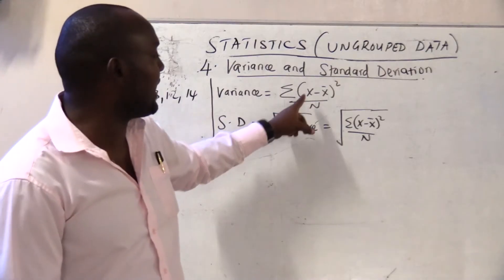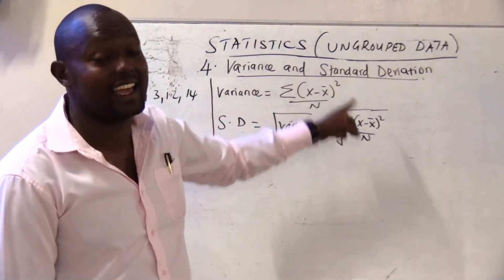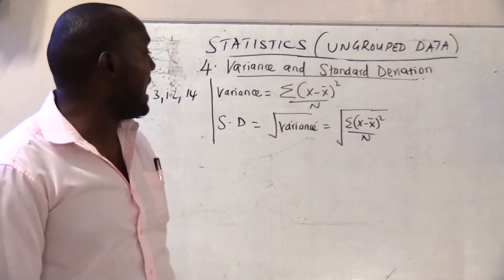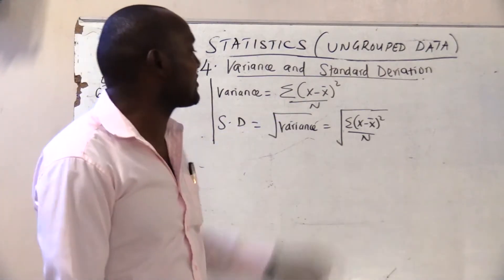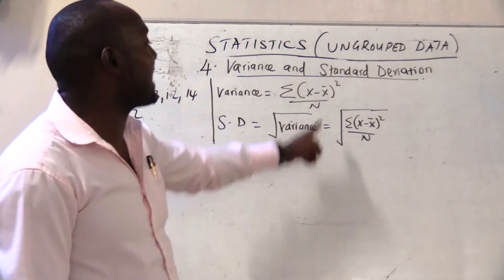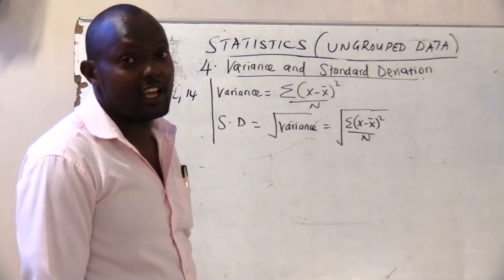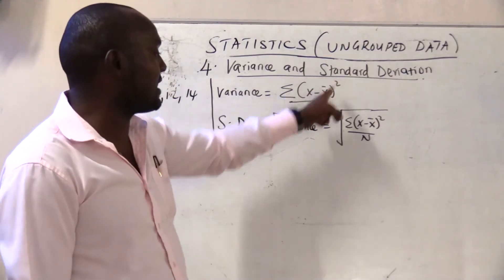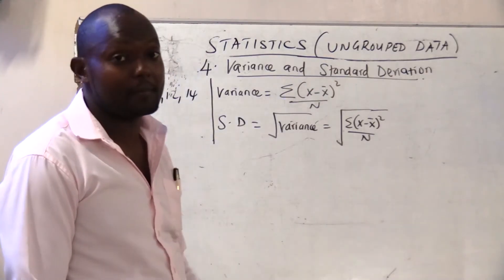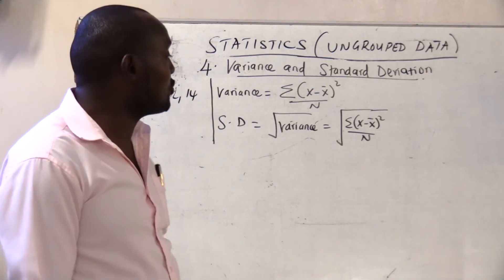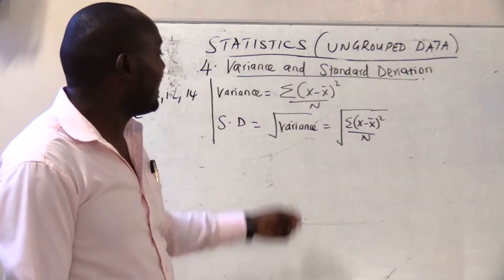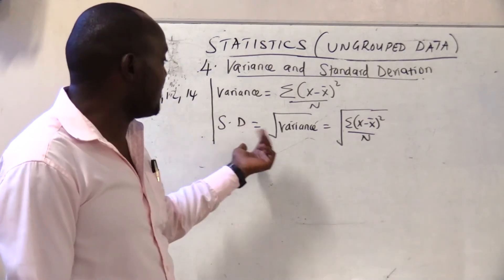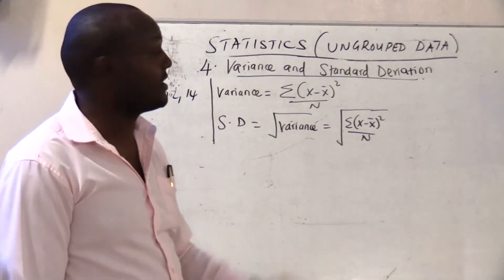How do we calculate variance? Variance is calculated as the sum of (x minus x-bar) squared, all over n. And the standard deviation is simply the square root of variance. So our main focus is on how to calculate variance.